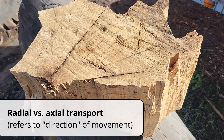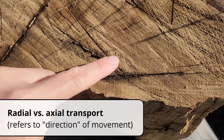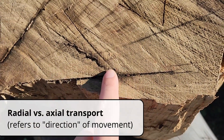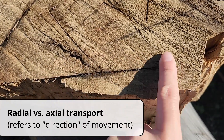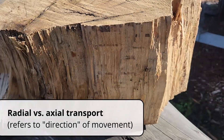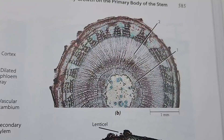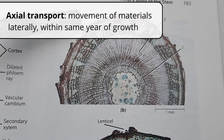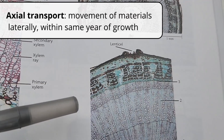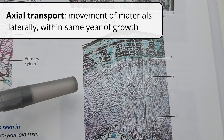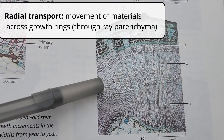The other transport system you could call it is radial transport versus axial transport. Whereas the symplasm and apoplasm I just discussed is more on the micro level — it's cell to cell — this talks more about just the direction that materials move inside a plant and within its years of growth. As a tree grows every single year, it's adding on material and creating these annual rings. If the plant moves material within a single year's growth, it's called axial transport.